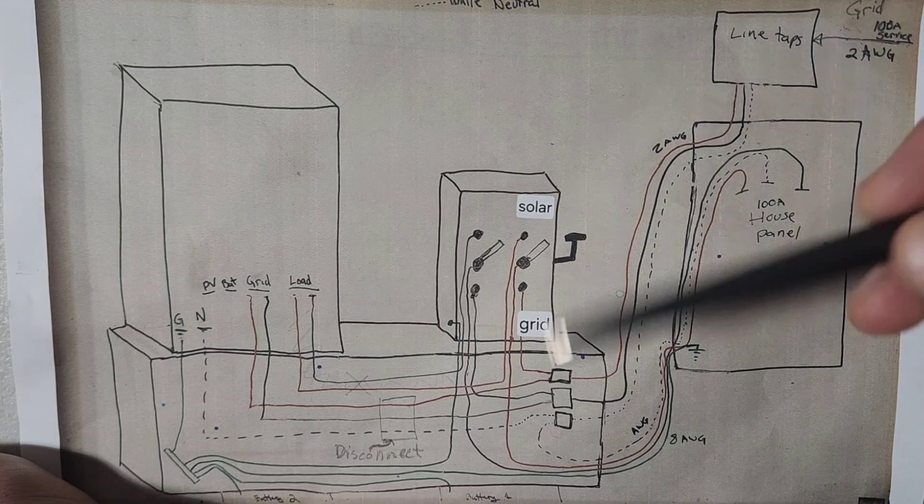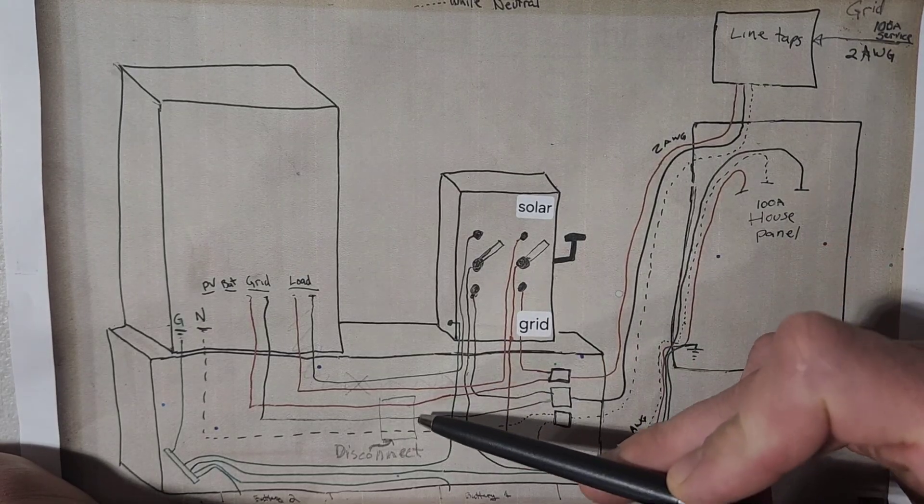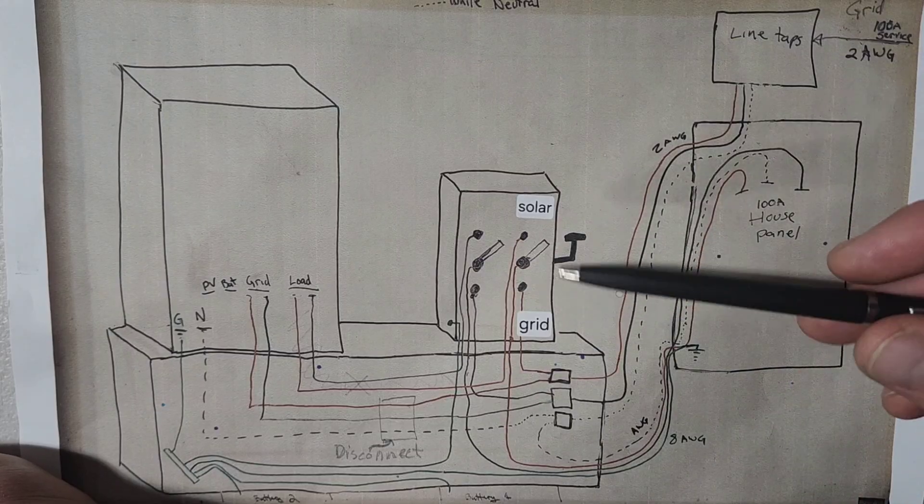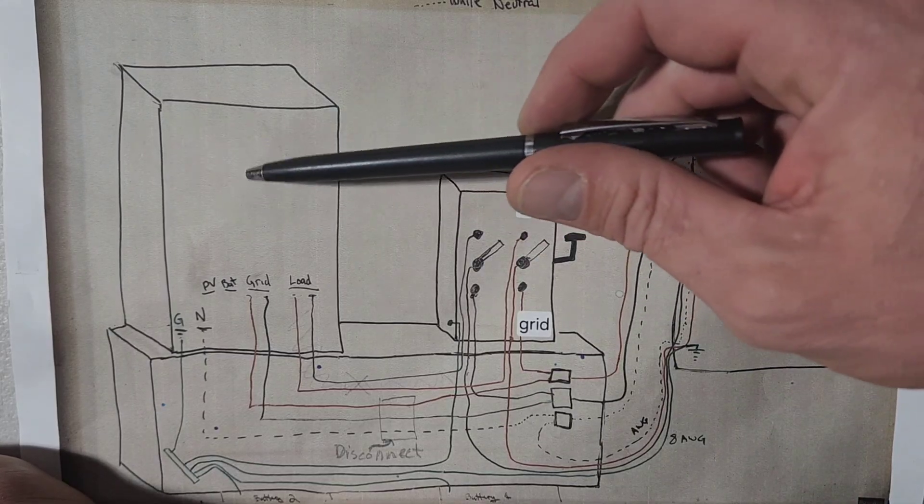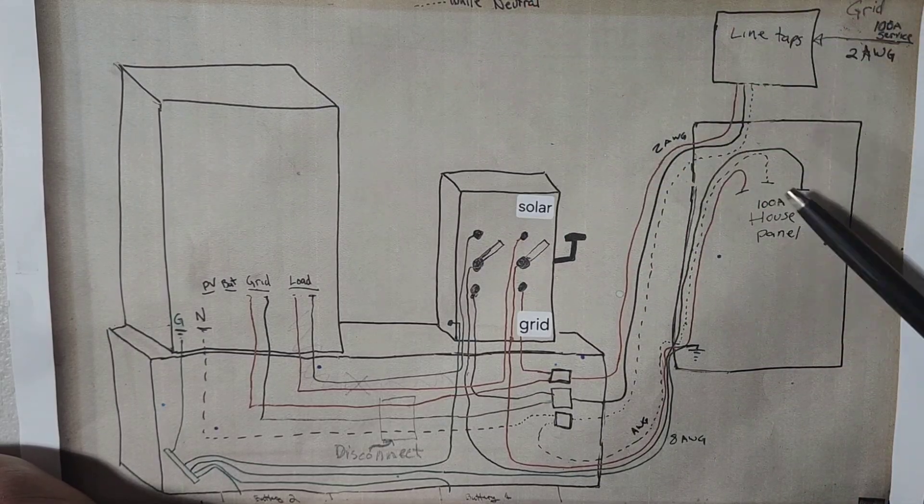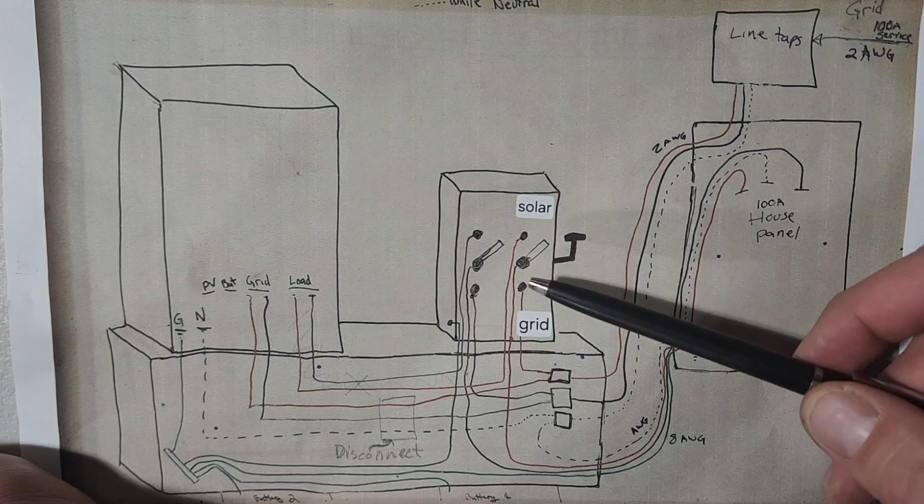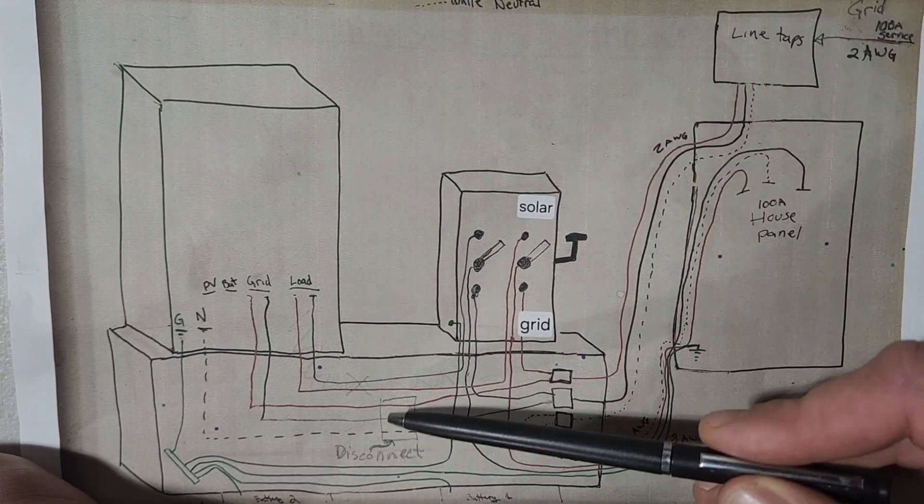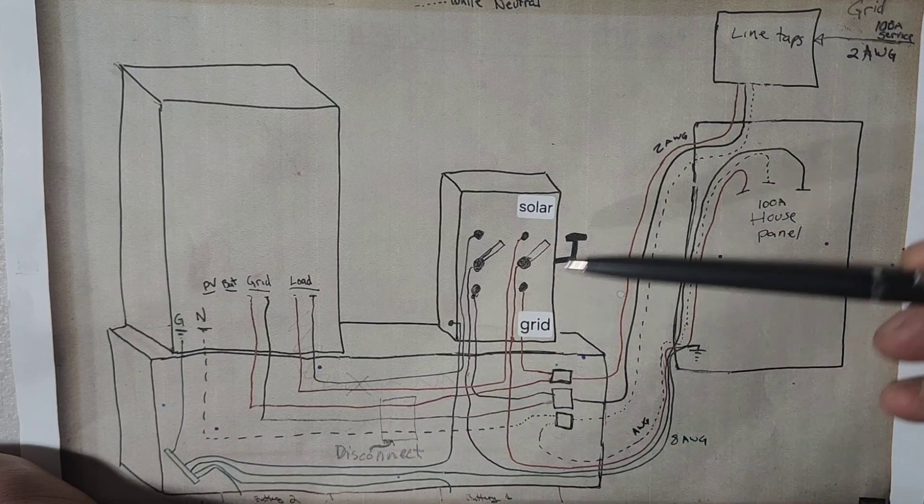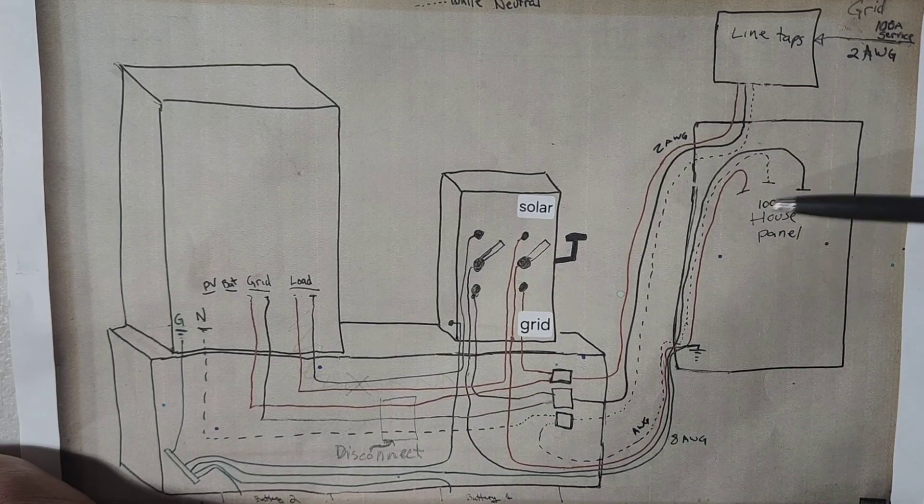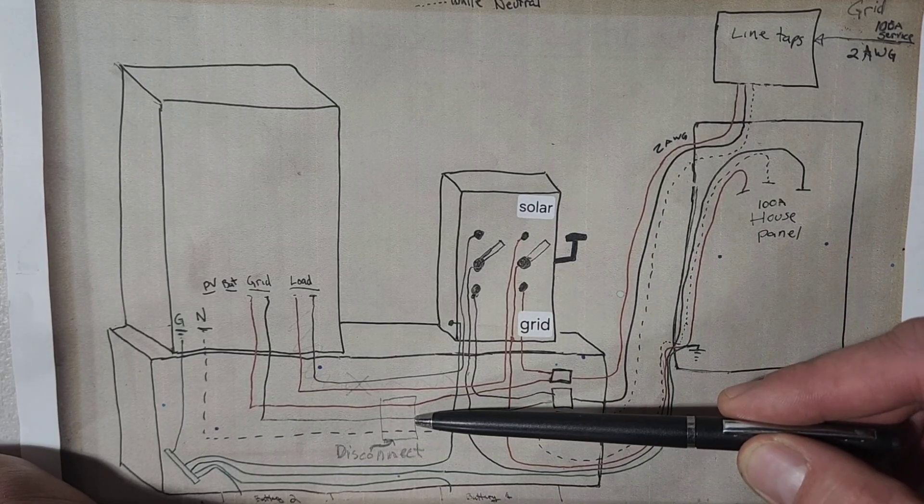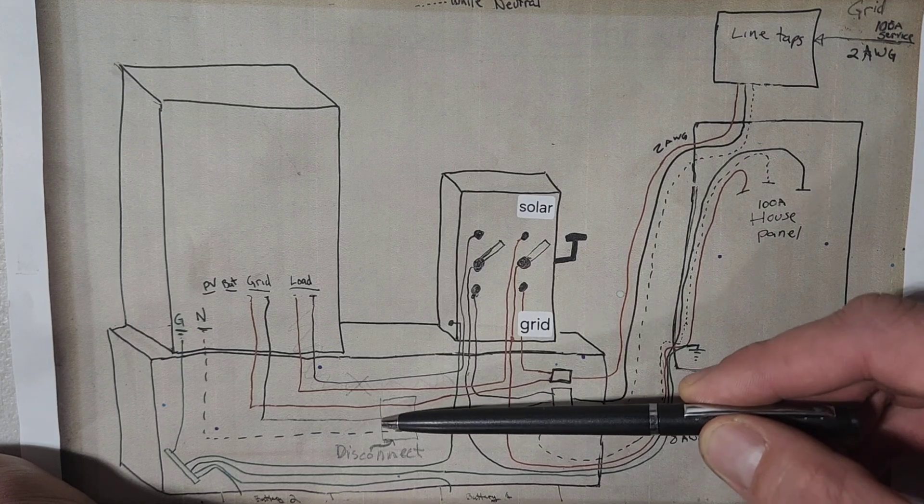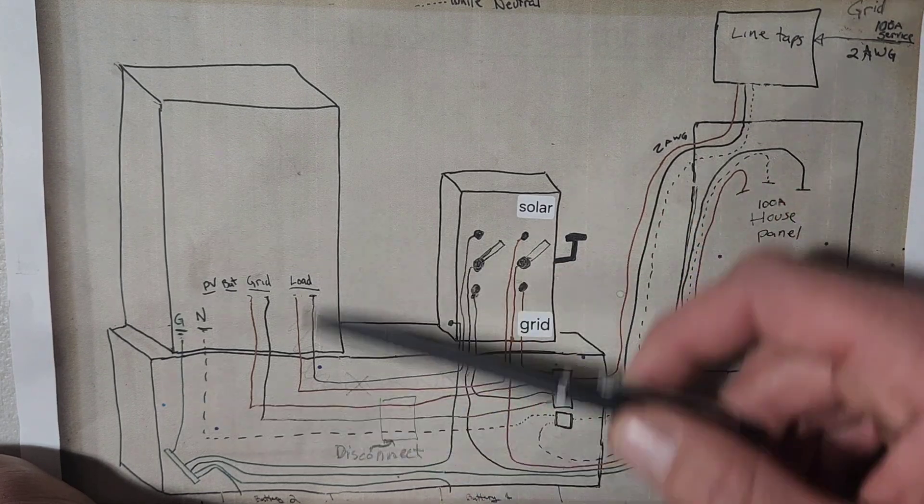Now one thing missing from this diagram is a disconnect switch. So when I've been testing these different inverters, I want power to be run to my house and I don't want to be working on live power here. So I did add a disconnect switch here. So if I switch this down to grid, run my house off grid, I can also switch power off here and so there's no live power on this side and so I can work on here safely.